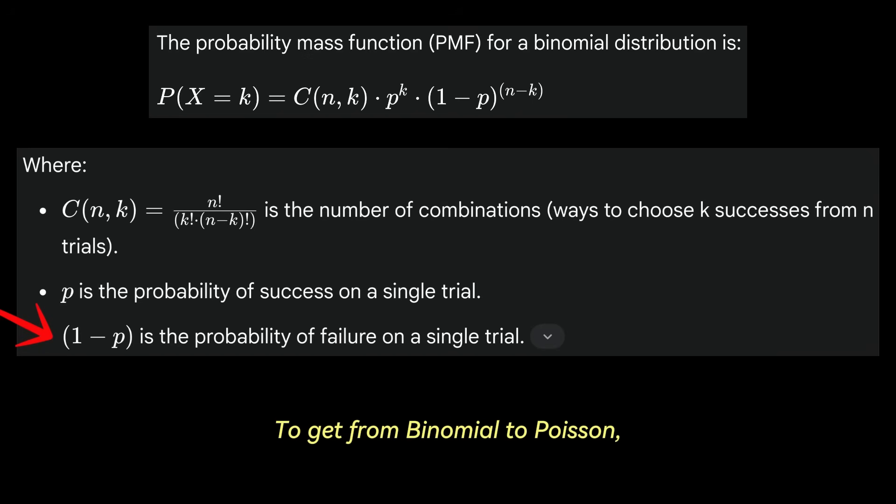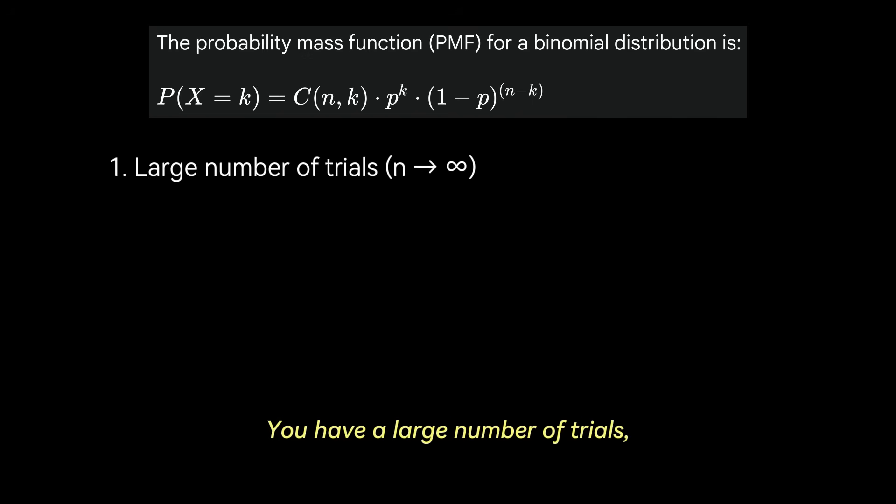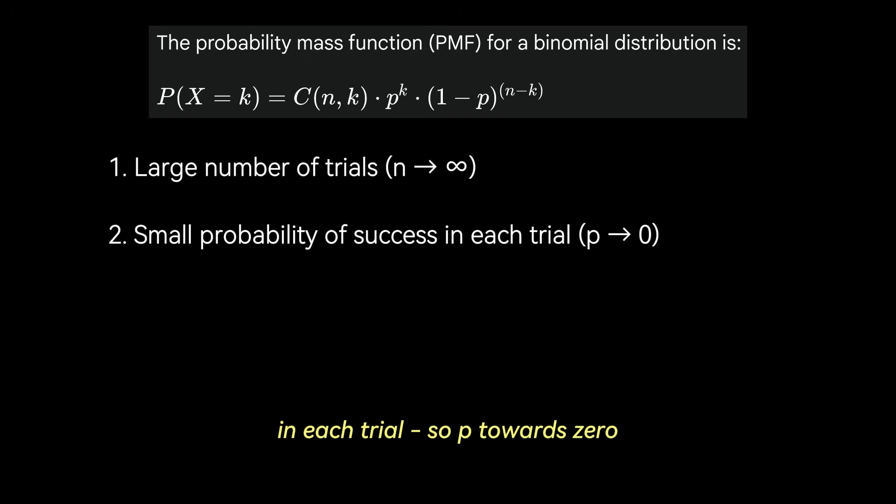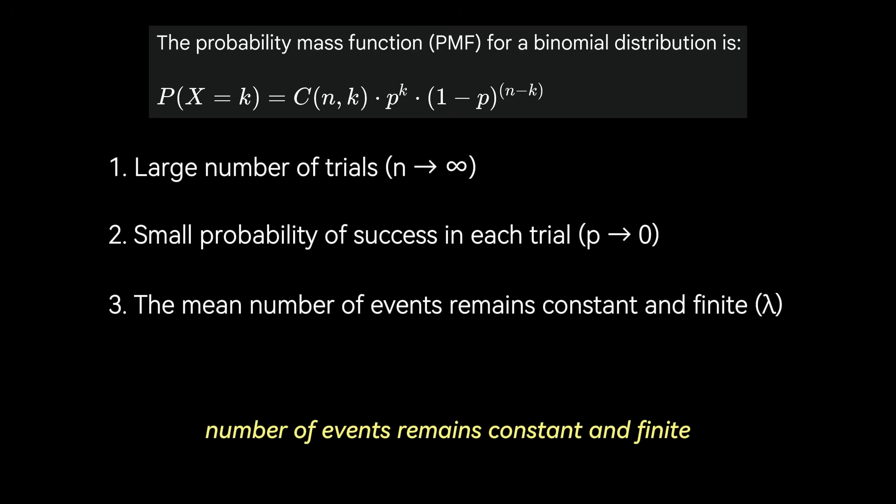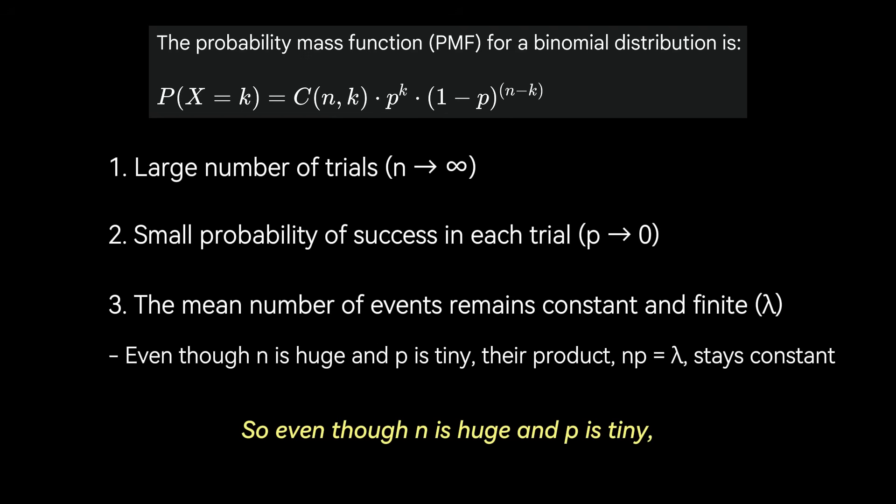This term is the number of combinations or the ways to choose k successes from n trials. p is the probability of success on a single trial and 1-p is the probability of failure on a single trial. To get from binomial to Poisson, we imagine the following conditions. You have a large number of trials, so n goes to infinity. We divide the continuous interval into very very large number of tiny subintervals or trials, and then you want to put a small probability of success in each trial, so p towards zero. And finally, the mean number of events remains constant and finite. This is referring to lambda, by the way. So even though n is huge and p is tiny, their product n times p equals lambda stays constant. This lambda is the average number of events we expect in the overall interval, so we can say p equals lambda over n.